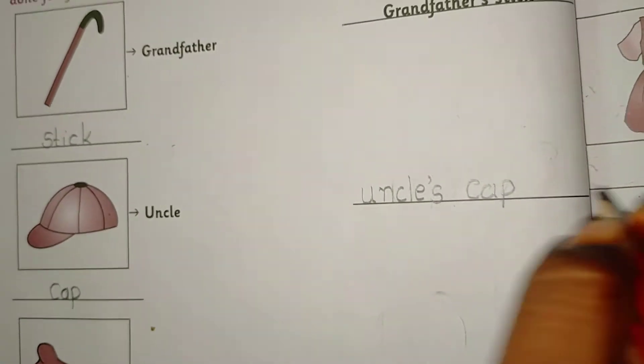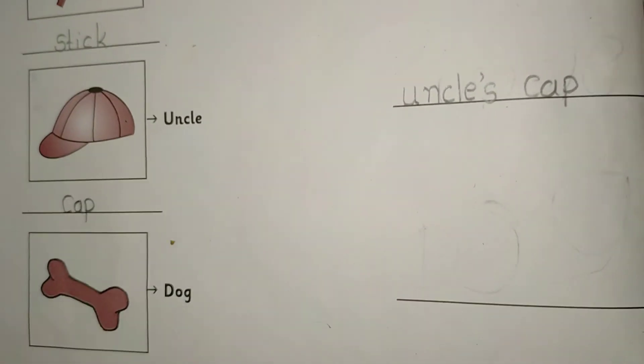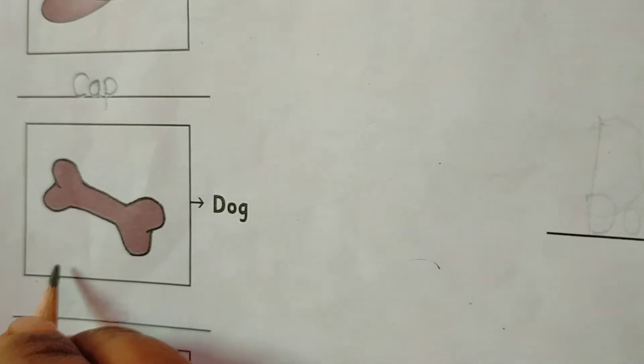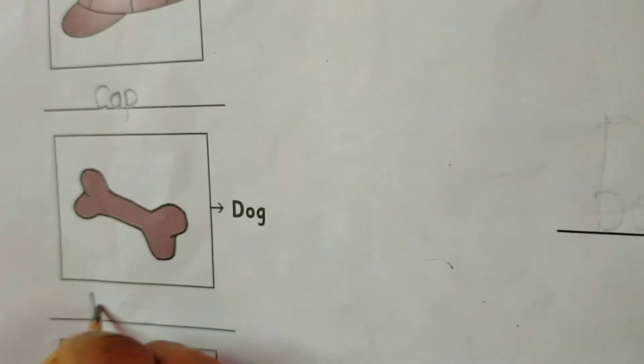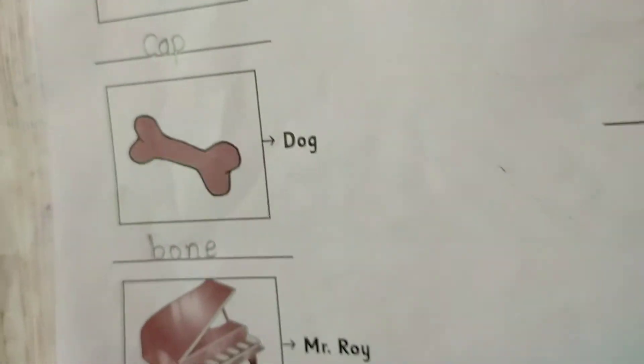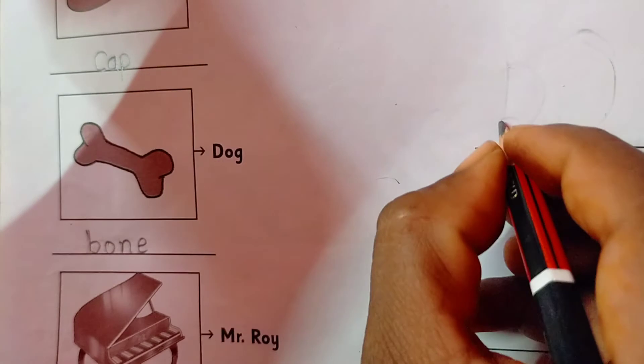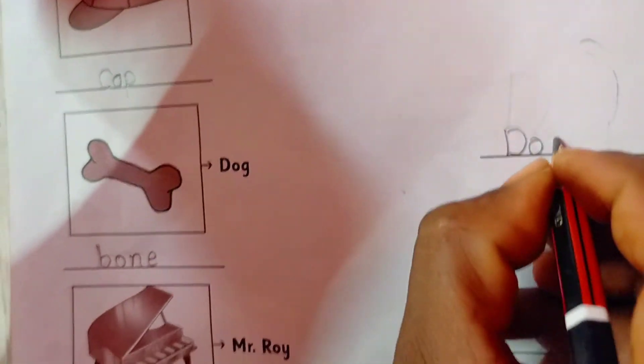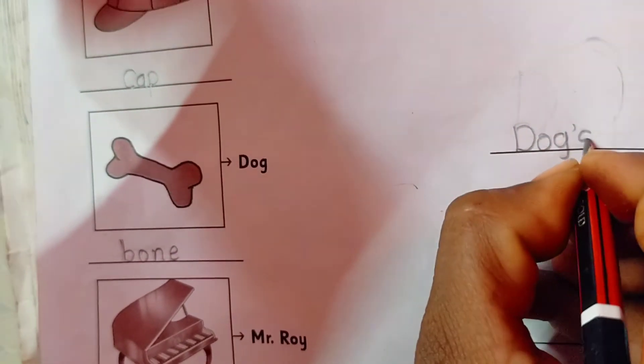What is this picture? This is the picture of a bone, and it belongs to dog. It belongs to dog. D-O-G. Dog's bone.